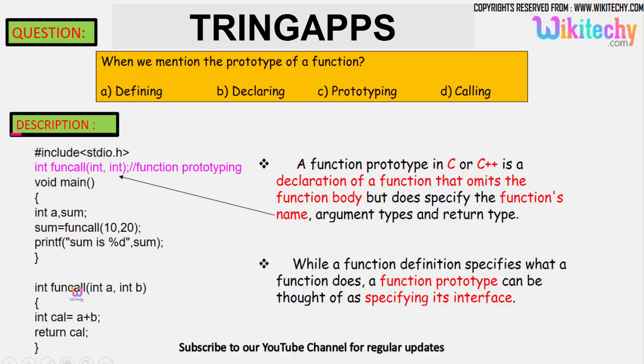This is called in the main function. The function call is a function which is called in the main function. A function prototype in C or C++ is a declaration of a function that omits the function body but specifies the arguments and its return types.